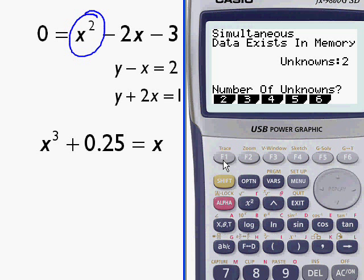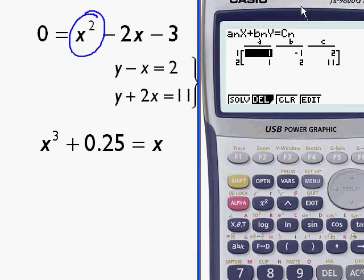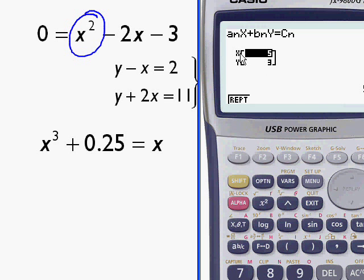How many unknowns have I got? 2. And so I can type it in. Now I've typed it in exactly as I've seen it. 1, minus 1, 2. 1, minus 1, 2. 1, 2, 11. 1, 2, 11. But notice that this is y minus x. The calculator expressly says x minus y. But I'm going to do this anyway. Rather than rearranging, I'm just going to solve that. So this is saying that x is equal to 3. Y is equal to 5. A little bit of common sense like that can save you time.